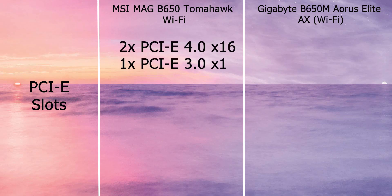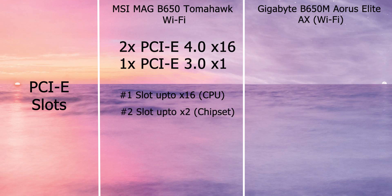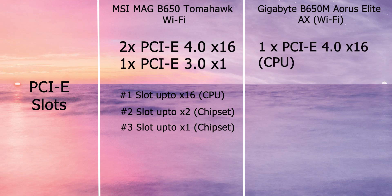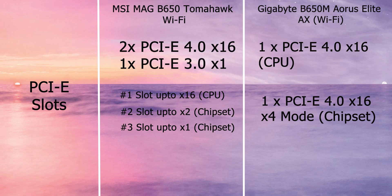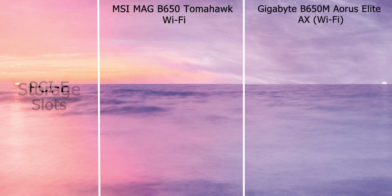The B650 Tomahawk has two PCIe 4.0 x16 slots and one PCIe x1 slot. Slot 1 supports up to x16 from the CPU, Slot 2 supports up to x2 mode from the chipset, and Slot 3 is PCIe 3.0 supporting x1 mode from the chipset. Gigabyte has one PCIe x16 slot from the CPU supporting PCIe 4.0 at x16 mode, and one PCIe x16 slot supporting PCIe 4.0 running at x4 from the chipset.